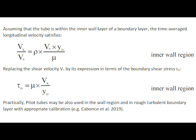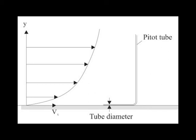Practically, a pitot tube may also be used in the wall region in rough, turbulent boundary layer with appropriate calibration.